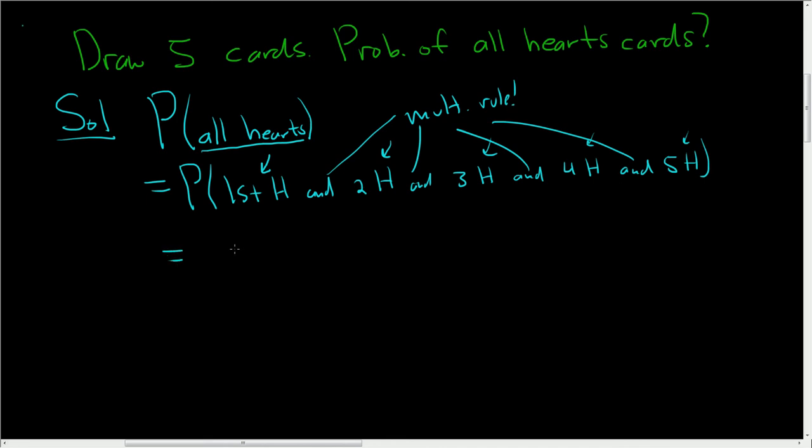Let's work it out. First we'll compute the probability that the first card is a heart. There are 13 ways to pick a heart and 52 ways to pick a card. So the probability that the first card is a heart is 13 over 52.